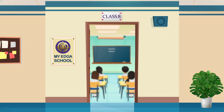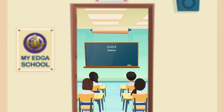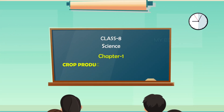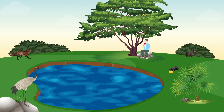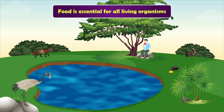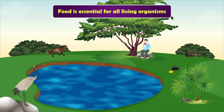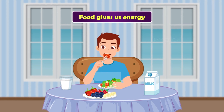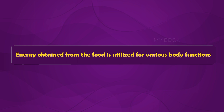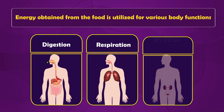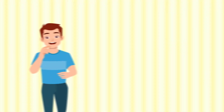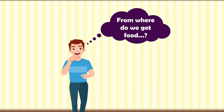Hello everyone, welcome to Class 8 Science videos of Chapter 1: Crop Production and Management. We all know that food is the fundamental necessity of all organisms. We get energy from the food that we eat, and this energy is utilized for carrying out various body functions such as digestion, respiration, excretion, etc.